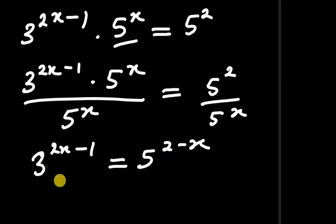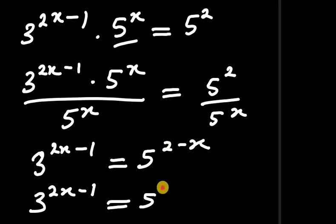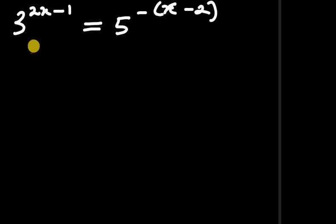We can rewrite 2 minus x by introducing a negative sign: it becomes negative times (x minus 2). So our equation is now 3 to the power of 2x minus 1, equals 5 to the power of negative 1 times (x minus 2).